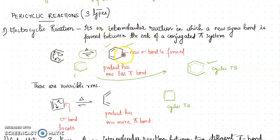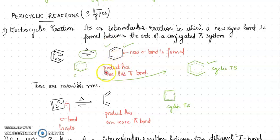This is the electrocyclic reaction: here you have the formation of a sigma bond and, in the product, fewer pi bonds. In the next video we'll discuss the next pericyclic reaction. Thank you.